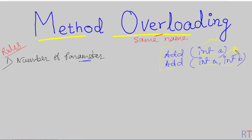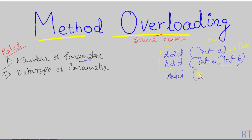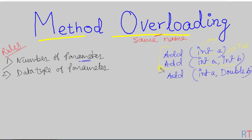We can also overload a method by changing the data type of the parameter. For example, we can have another overloaded method with the same name where instead of taking integer and integer, it takes integer and double as parameters — overloading by changing the data type.